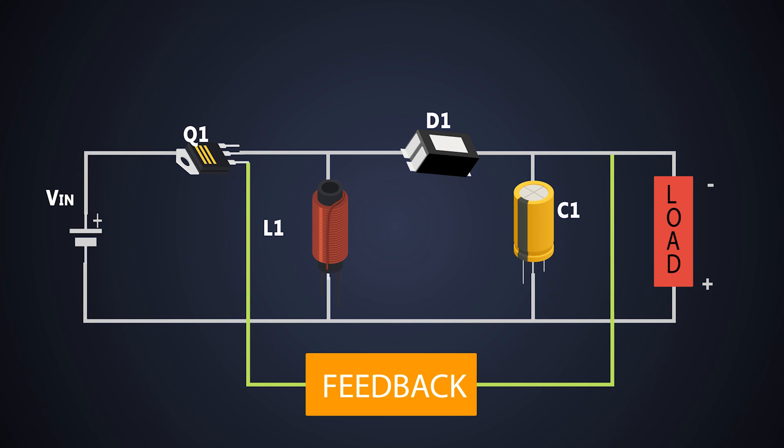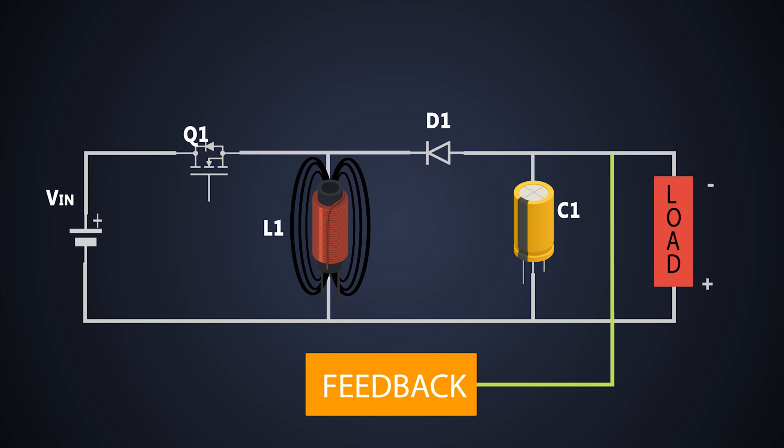So now let's see the working of the buck-boost converter. It will be easy to understand in terms of the reluctance of an inductor to allow the rapid change in the current. Initially, when the MOSFET is turned off, there is no current flowing through the circuit.